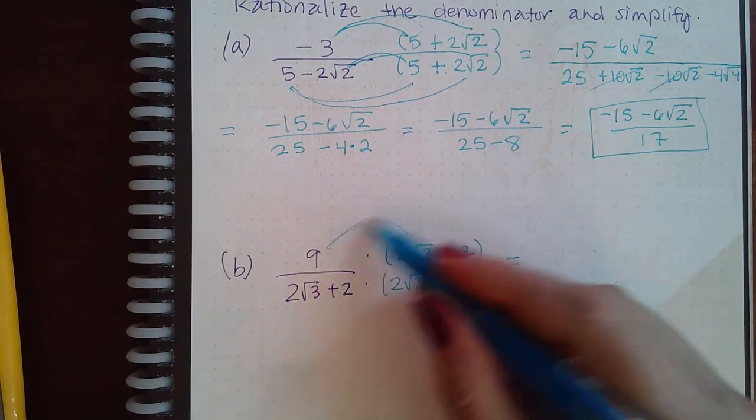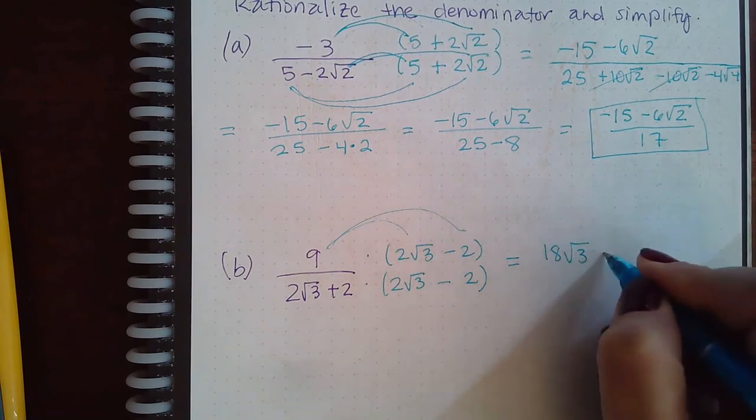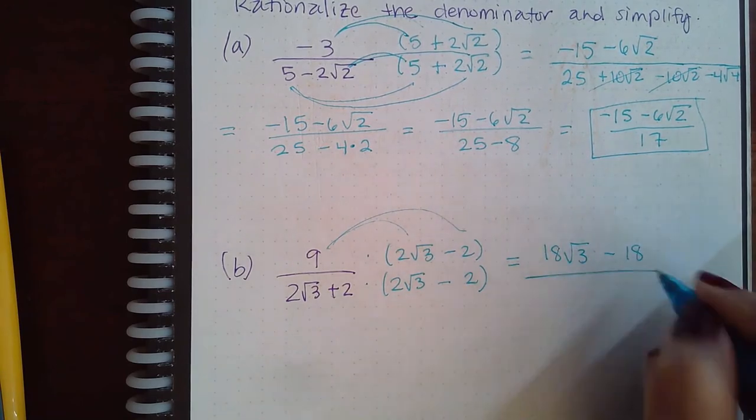So on the top, I'm going to distribute. I get 18 square root of 3 minus 18. The bottom, I'm going to FOIL. So 2 times 2 is 4.